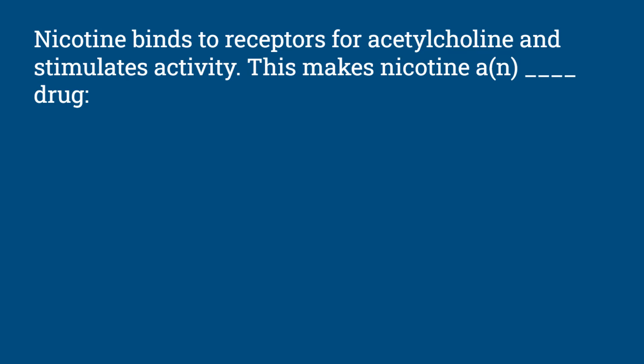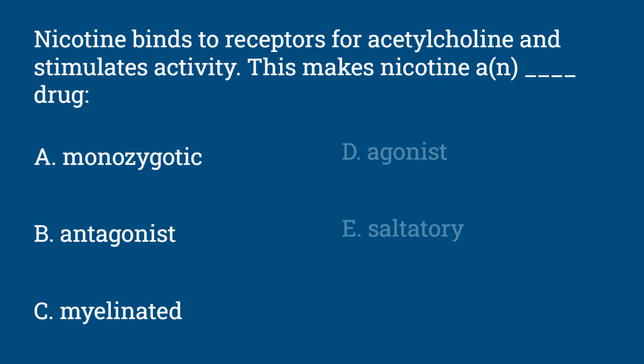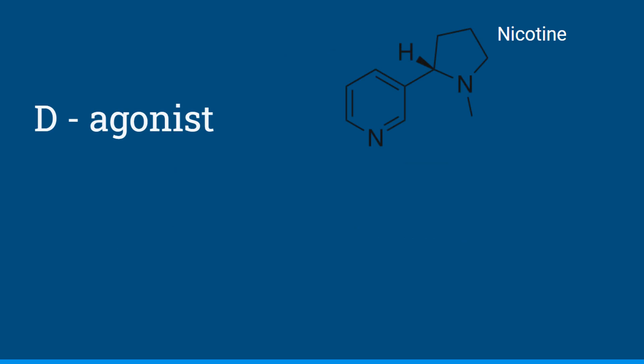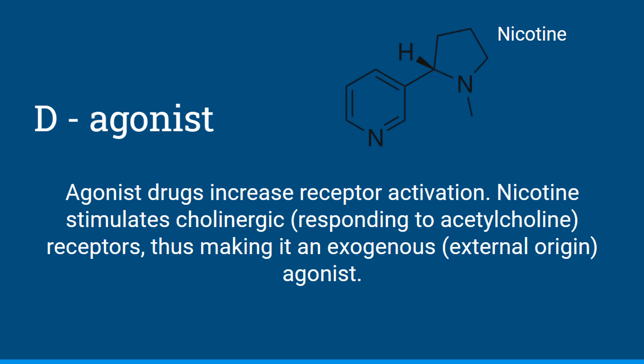Question 10: Nicotine binds to receptors for acetylcholine and stimulates activity. This makes nicotine a blank drug. Is it a monozygotic drug, an antagonist drug, a myelinated drug, an agonist drug, or a saltatory drug? The answer is D, an agonist drug. Agonist drugs increase receptor activation. Nicotine stimulates cholinergic receptors — receptors that respond to acetylcholine — making it what we call an exogenous agonist. Exogenous means it comes from outside the body, compared to endogenous chemicals released by the body itself.